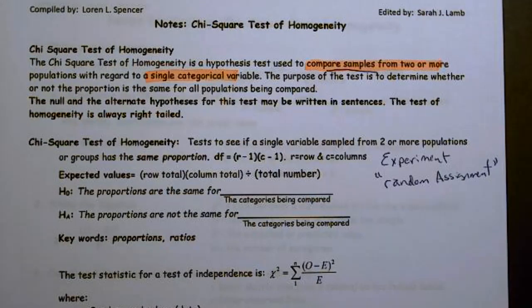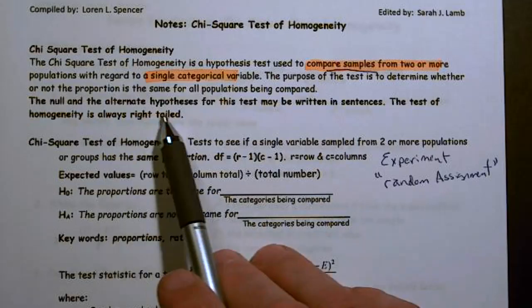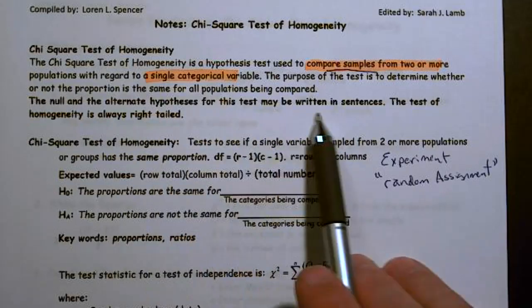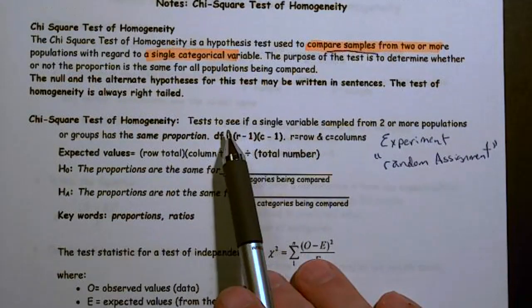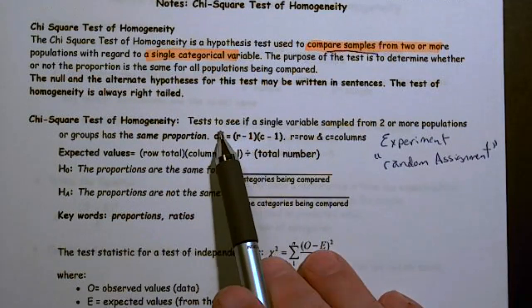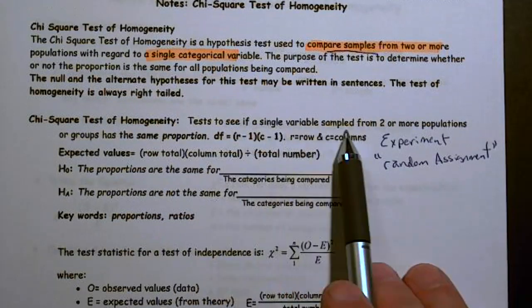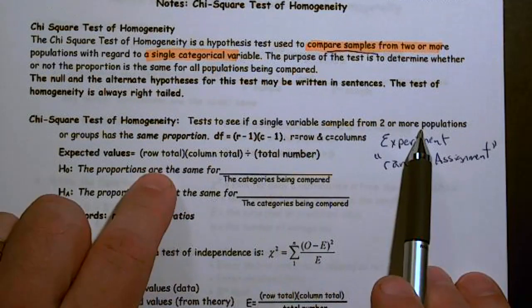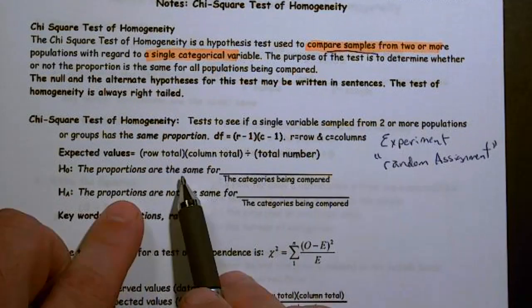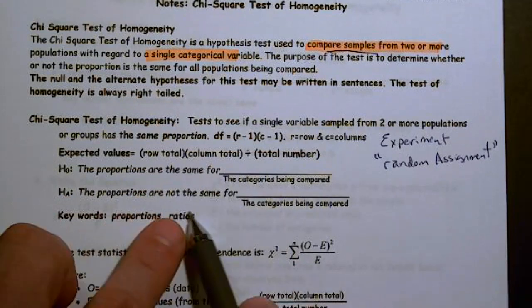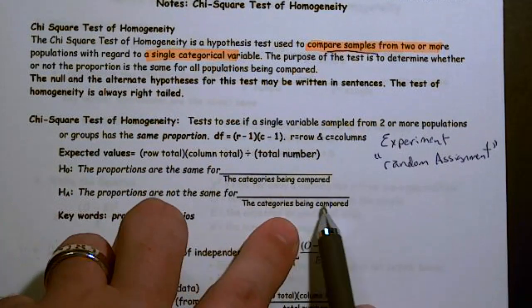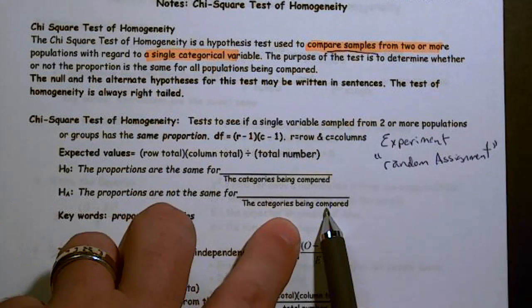The purpose of the test is to determine whether or not the proportion is the same for all populations being compared. The null and the alternative hypothesis for this test may be written in sentences. It's always going to be right-tailed. Test to see if a single variable sampled from two or more populations has the same proportion, or the proportions are not for the categories being compared.